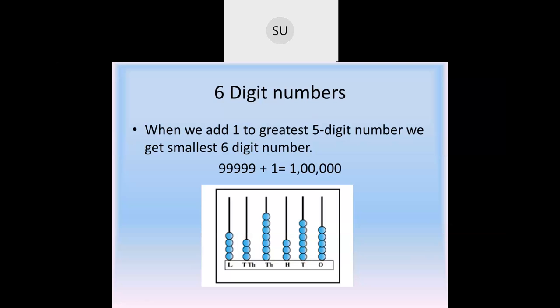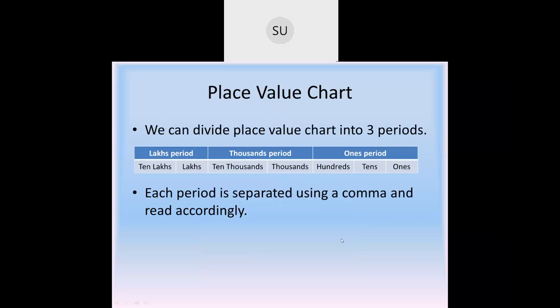What are 6-digit numbers? When you add 1 to the greatest 5-digit number, you get the smallest 6-digit number. The greatest 5-digit number is 99,999, and plus 1 gives you the smallest 6-digit number which is 1 lakh. If you look at this abacus, it shows a 6-digit number — 4 lakhs 37,365.